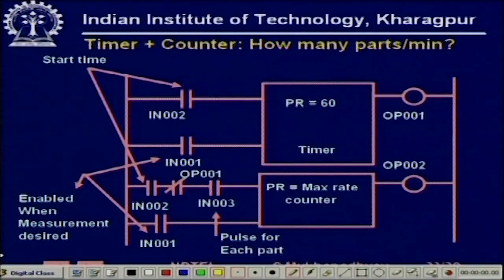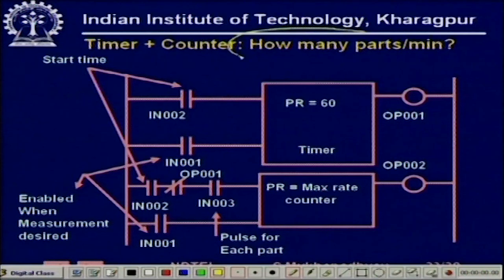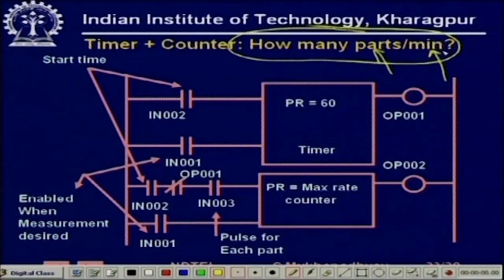This is an example of using a counter for an industrial problem. Another nice example is counting how many parts per minute are going on the conveyor, which indicates the production rate — important management information. We want to count parts only over one minute after pressing start. For creating this one-minute interval we need a timer, and for counting the parts we need a counter. Therefore, this is a mixed timer-counter example.